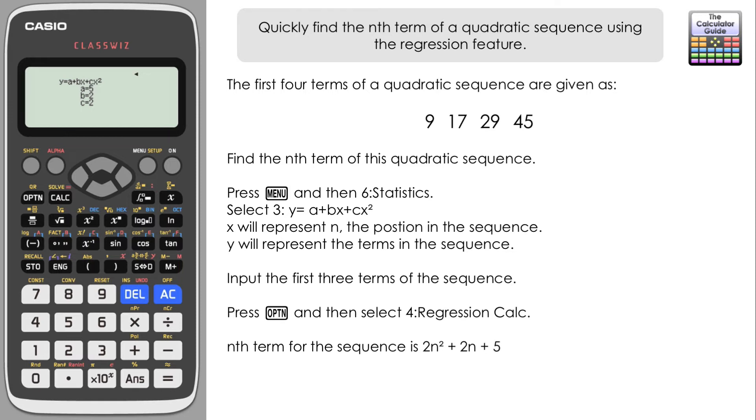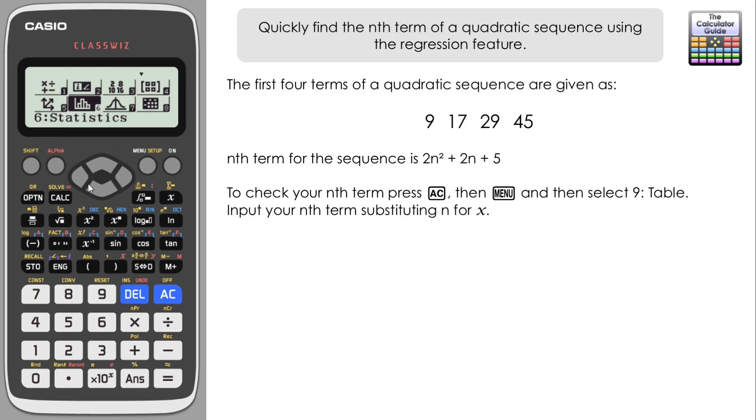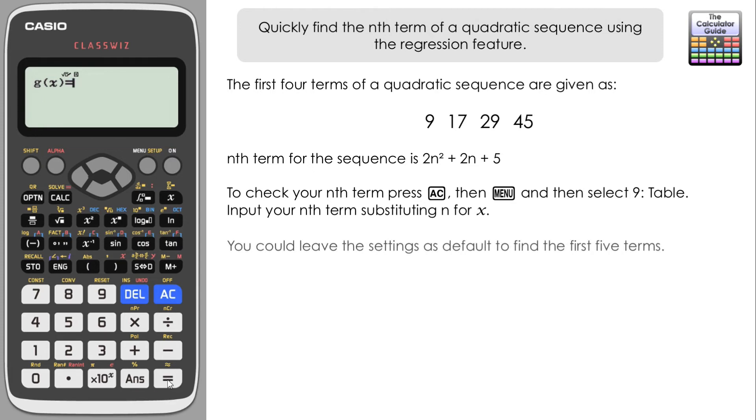Now what we're going to do is use table mode to test that that is correct. Remember, table mode operates as a function of x, so again we're going to have to swap back and substitute in our n for x this time. So in table mode, let's just go to menu and table, and we want a function of x. This time we're just going to replicate our nth term but using x rather than n, so 2x squared plus 2x plus 5.